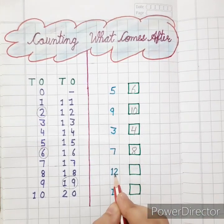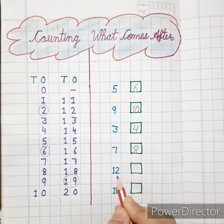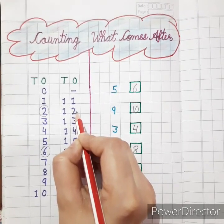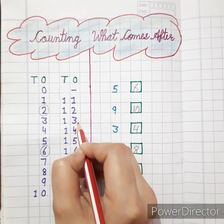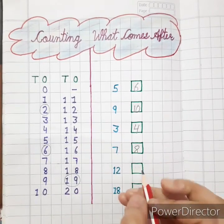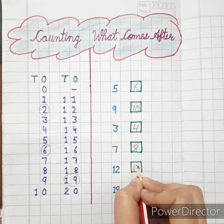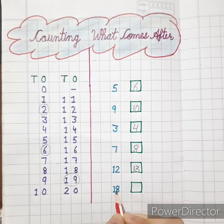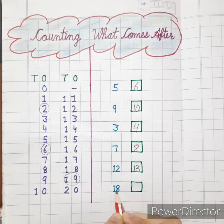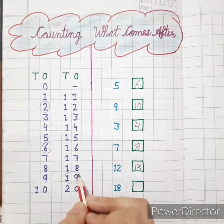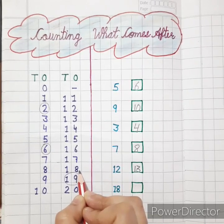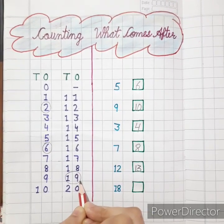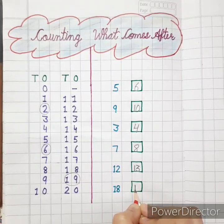This is 12. See here, what is the next number of 12? That is 13. So write here 13. Next number is 18. So kids, tell me, what is the next number of 18? That is 19. So write 19.